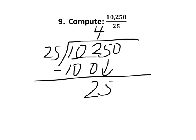Then we make 25 going into 25, which is one time. One times 25 is 25. Then the remainder is zero.